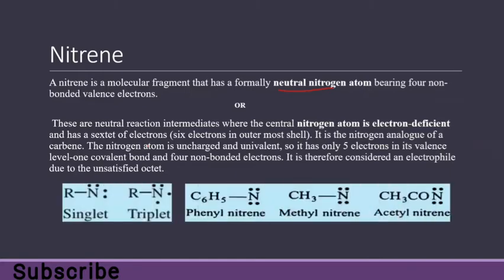So how does it look? We have four valence electrons and one covalent bond with another molecule. As the definition says, nitrine is the nitrogen analog of carbene, so it also has singlet nitrine and triplet nitrine.